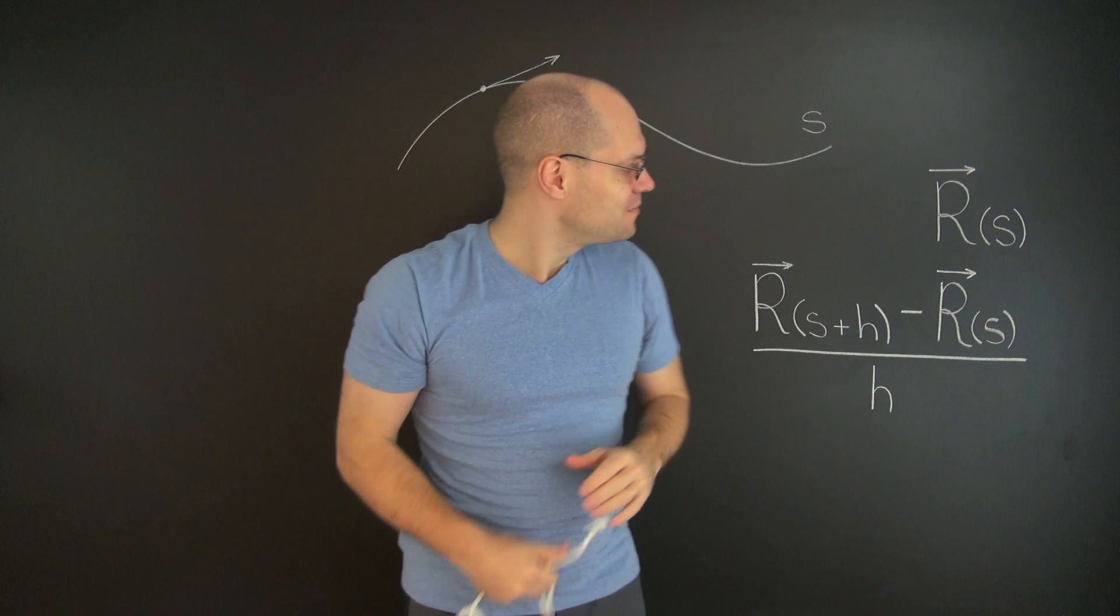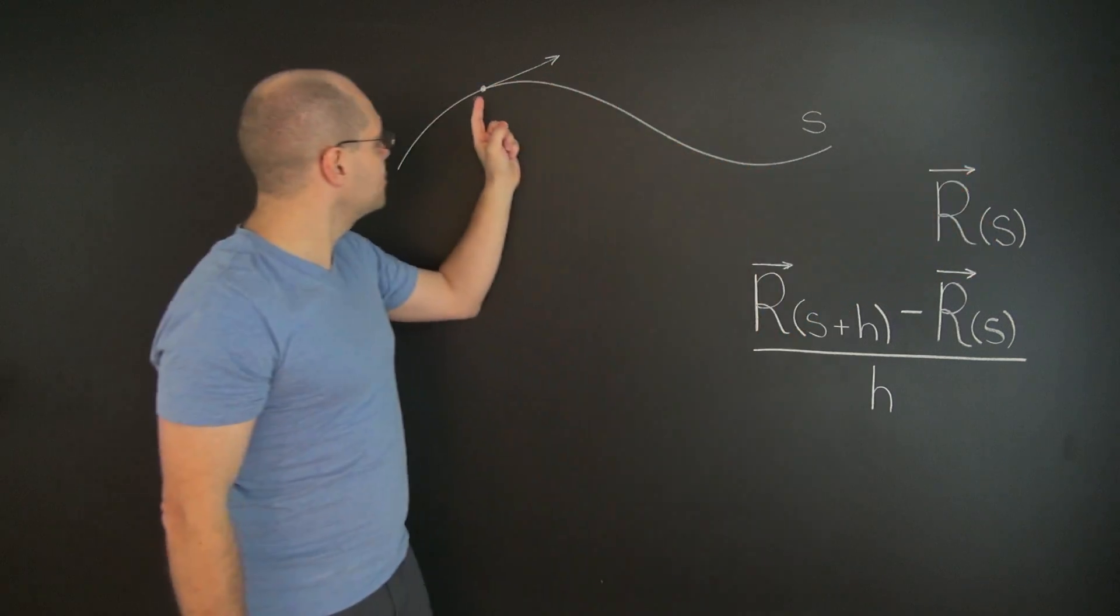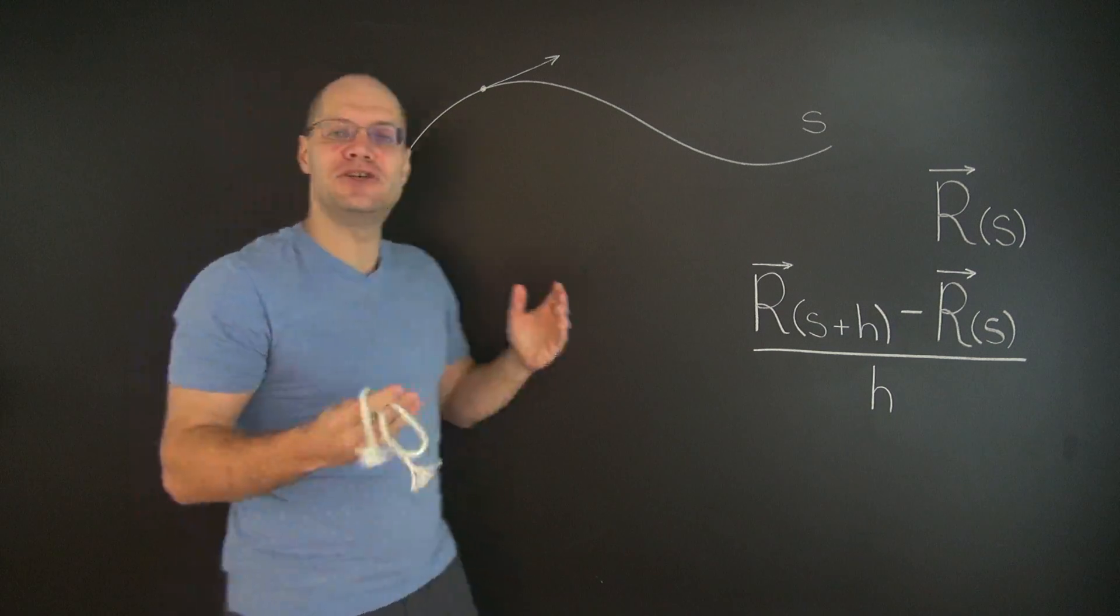So how are we going to prove that when the curve is parametrized by arc length, that the corresponding tangent is unit length?